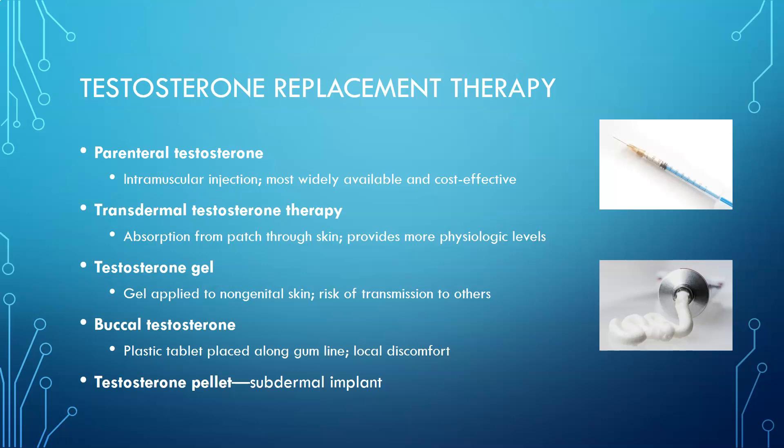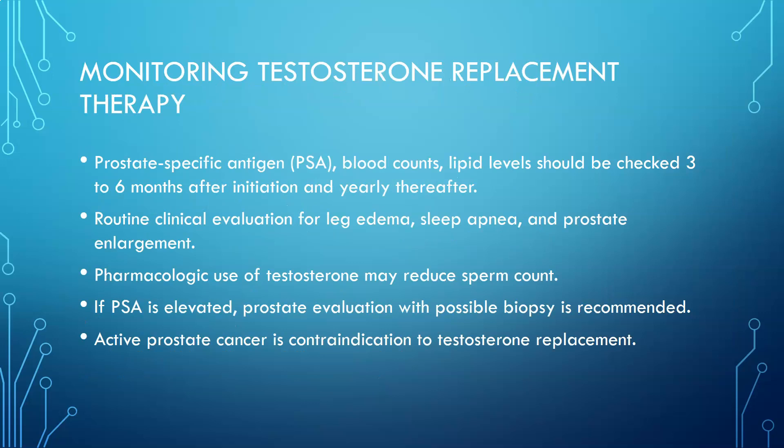Things to consider with testosterone replacement therapy: it must be monitored — watch prostate-specific antigen and blood counts. Lipid levels should be checked every three to six months after initiation. Do routine clinical evaluations for leg edema, sleep apnea, and prostate enlargement. Pharmacologic testosterone may reduce sperm count. If PSA is elevated, evaluate the prostate with possible biopsy to rule out prostate cancer, as active prostate cancer is a contraindication. There is also some controversy about whether men on testosterone replacement therapy are at higher risk of heart attacks.